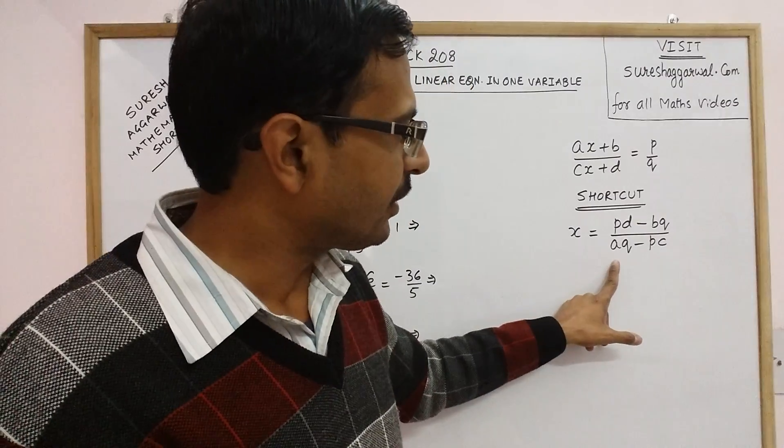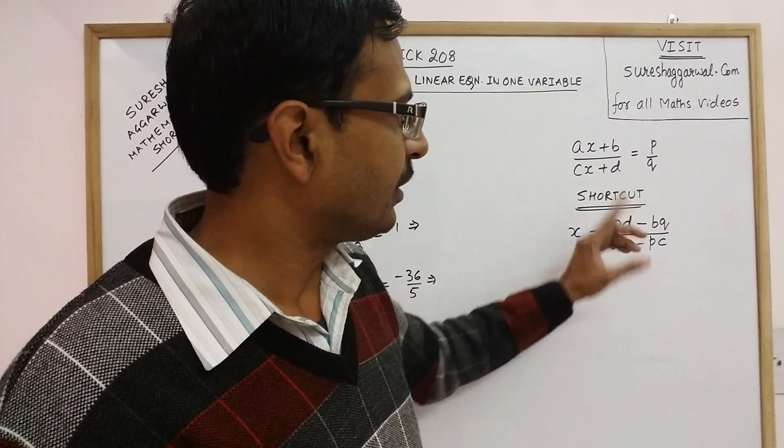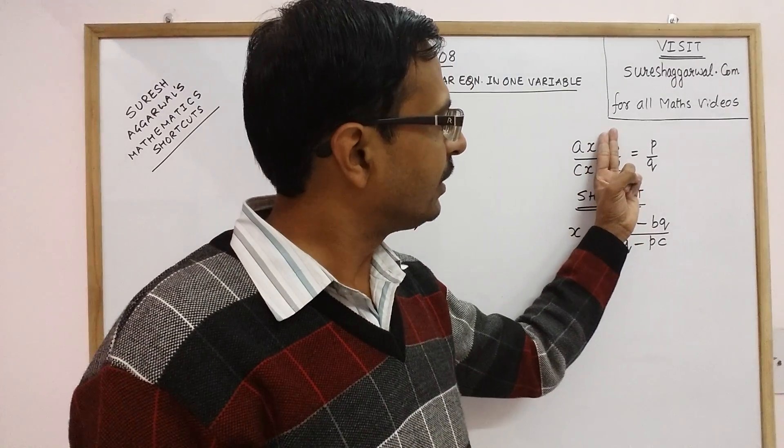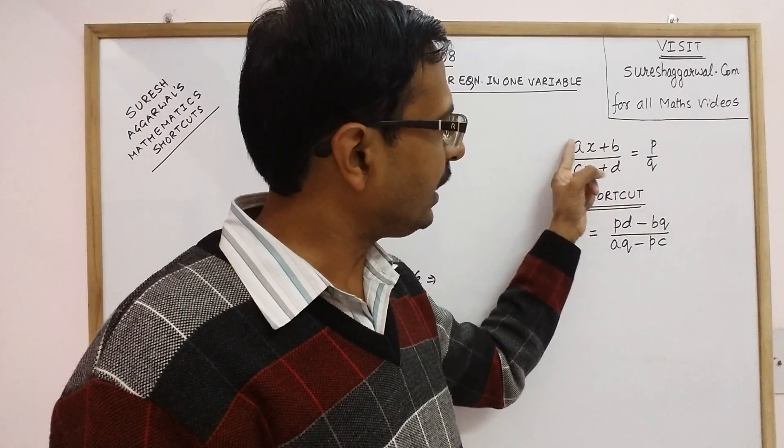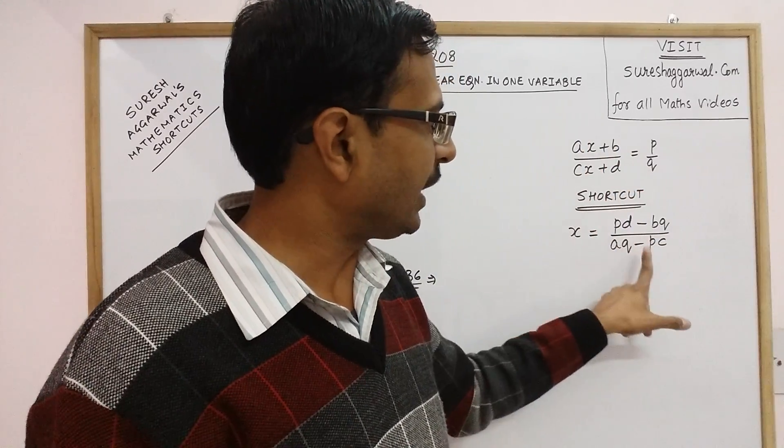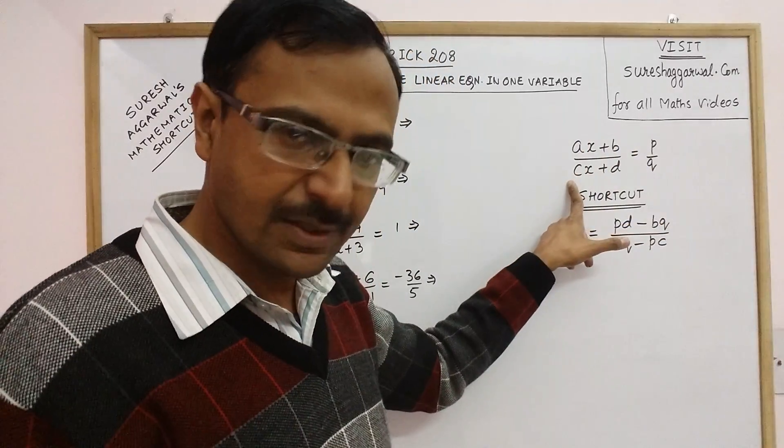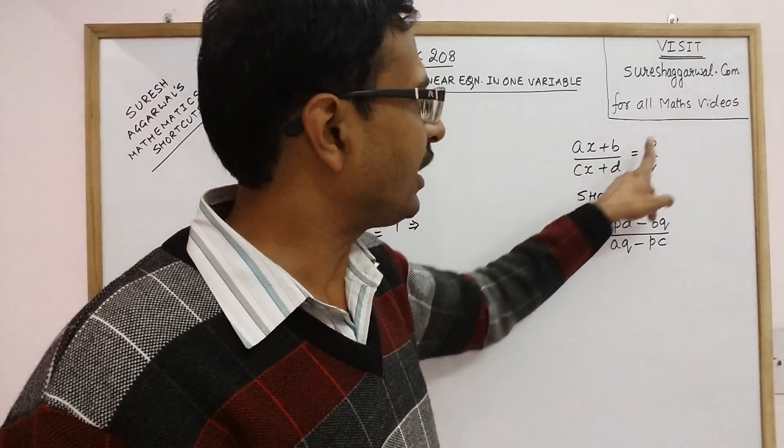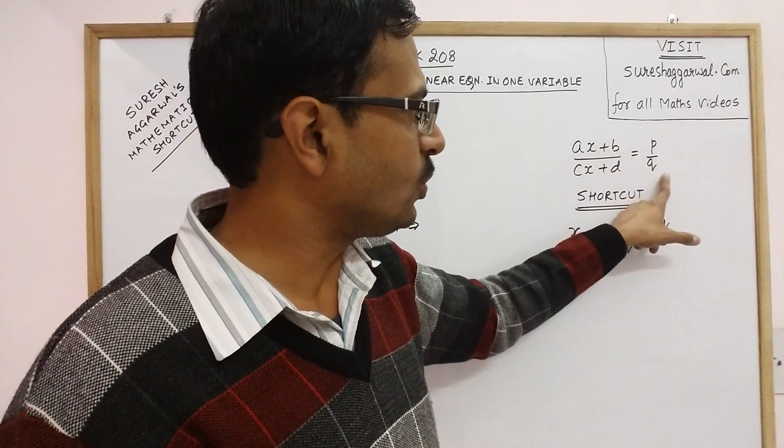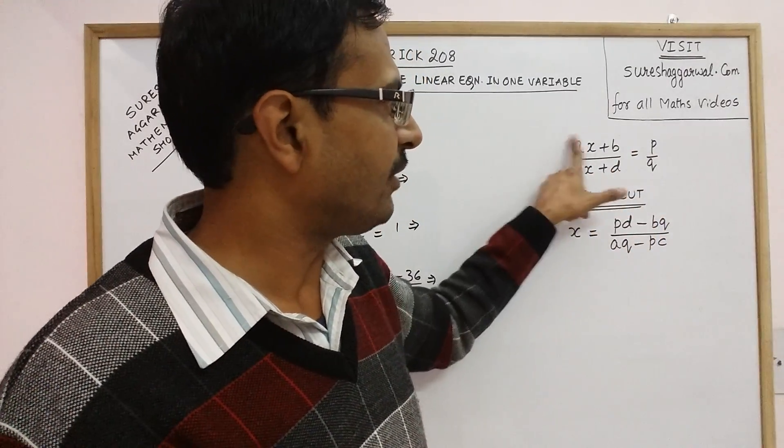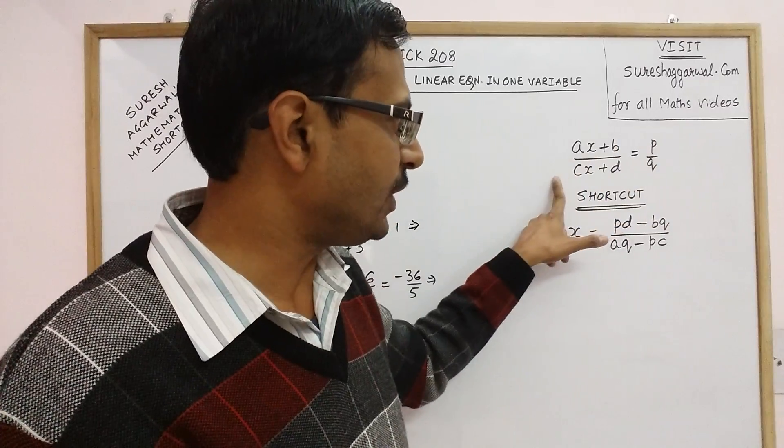In the denominator just forget the constant term here and now cross multiply: aq minus pc. So in the numerator we have pd minus bq and in the denominator we have aq minus pc.